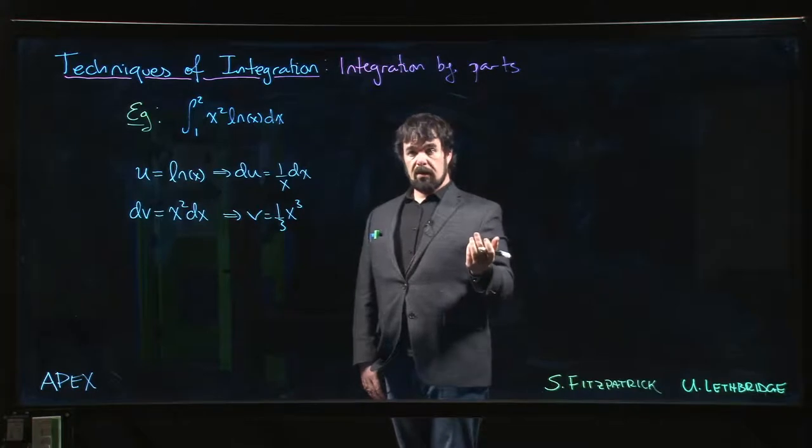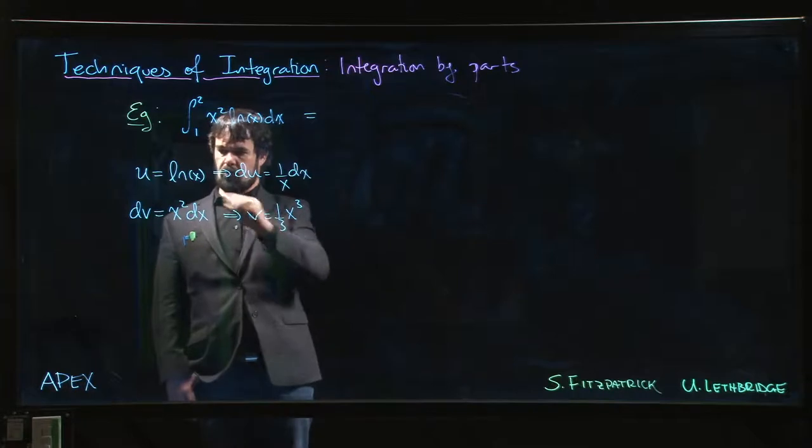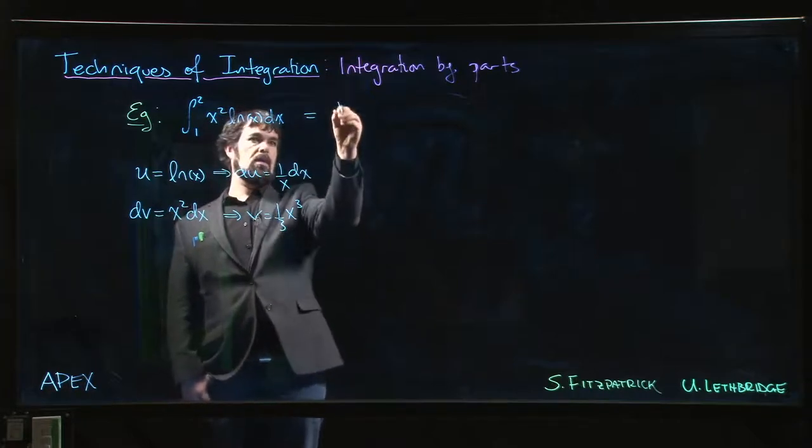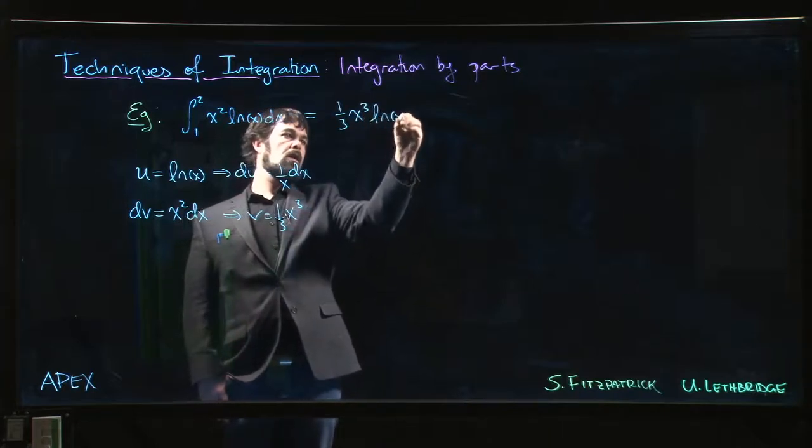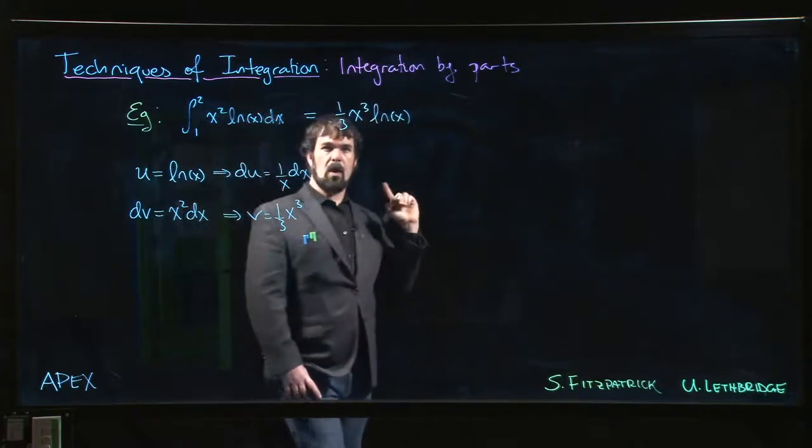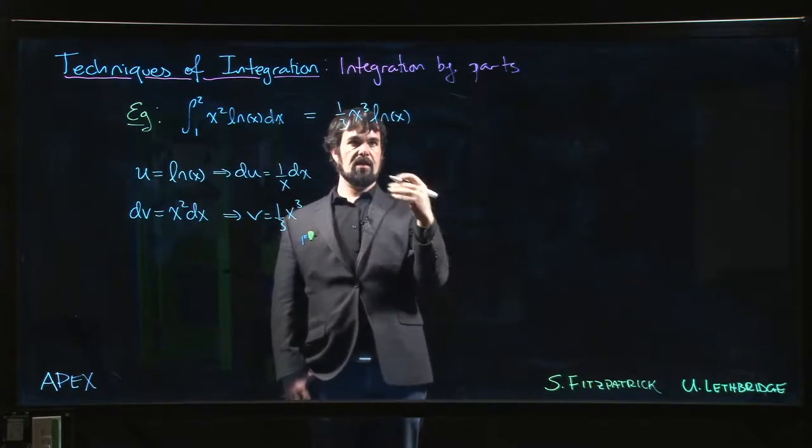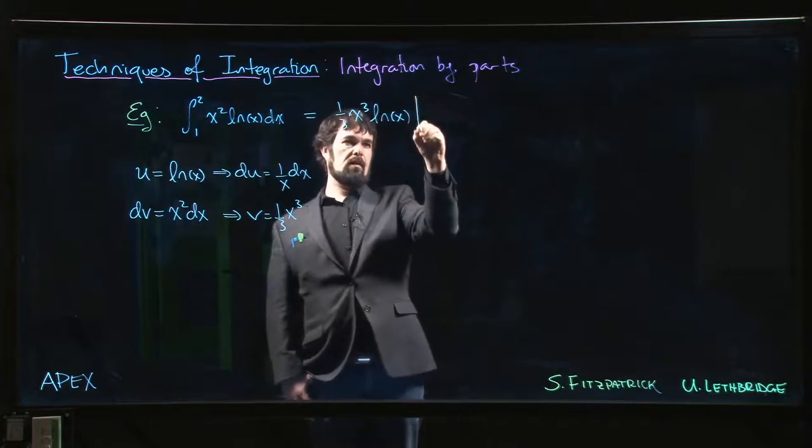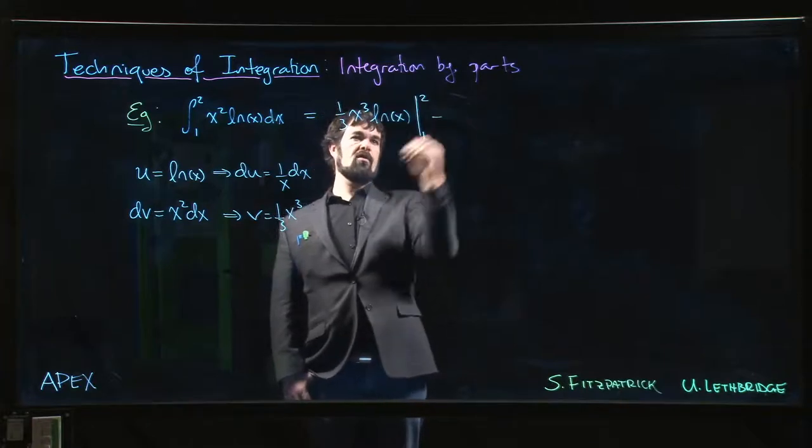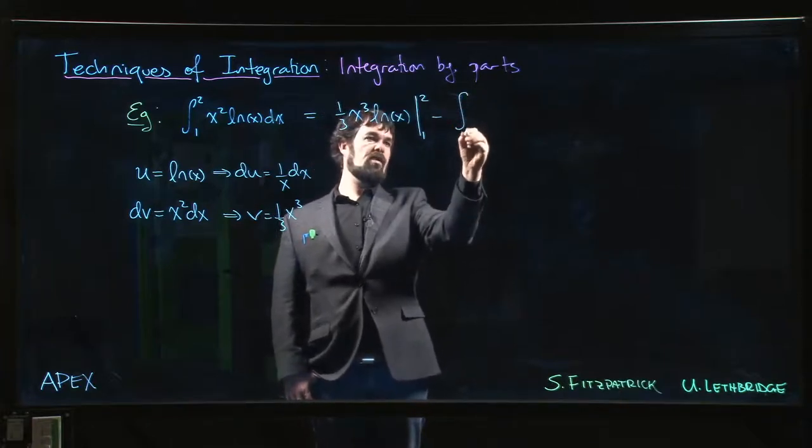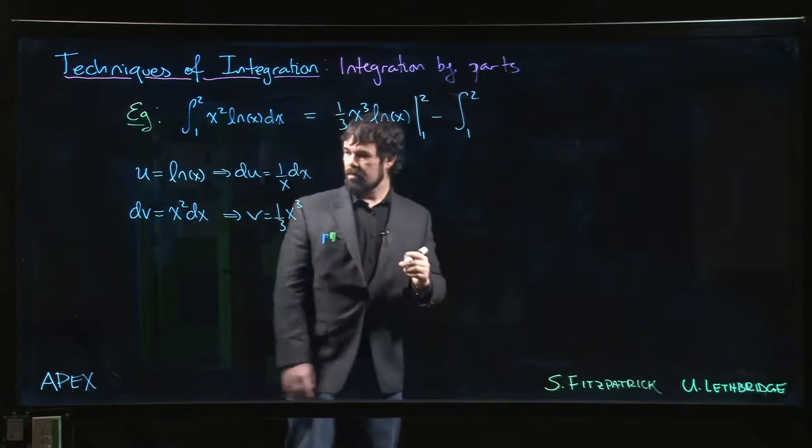Alright, so we apply integration by parts. We have uv, so we have one third x cubed log x. But because this part—we know there is no anti-derivative left to take there, this is part of our anti-derivative—we need to evaluate that. We need to plug in those limits, 1 and 2. So we have that minus the integral from 1 to 2 of v du.